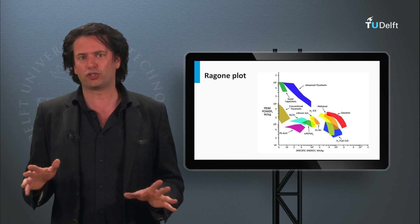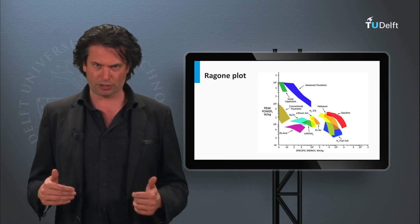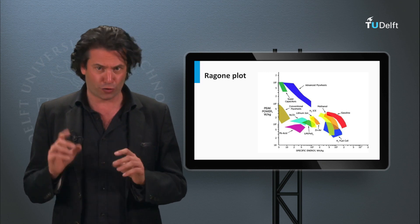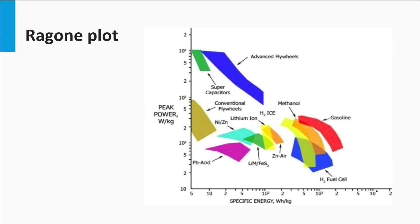There are several technological options to fulfill the storage requirements. How do we make an optimal choice for the storage system? Let's go back to the Ragone plot again. For solar applications, depending on the scale of implementation, we need a high energy density and a reasonable high power density.